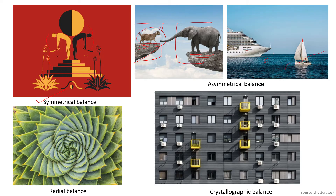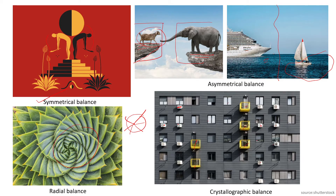The third type is radial balance, where elements radiate outward from the center and all look balanced. The fourth type is crystallographic balance, where in a composition elements are balanced across the whole — like windows and architectural elements balancing each other. It is not symmetrical and not radial, but it is crystallographic.